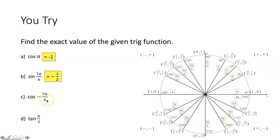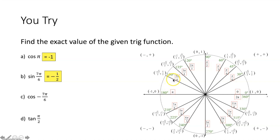Part c, evaluate cosine of negative 7π over 6. There are no negative angle measures on the unit circle, so we start with the initial side on the positive x-axis and rotate our terminal side clockwise. Since it's negative 7π over 6, we count by π over 6s clockwise. After 7 steps we reach a position equivalent to positive 5π over 6 radians — those are coterminal angles. Now we evaluate cosine of 5π over 6. Cosine equals the x-coordinate of the corresponding point, which is negative √3 over 2.